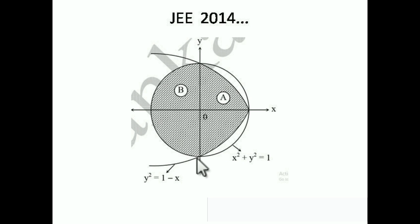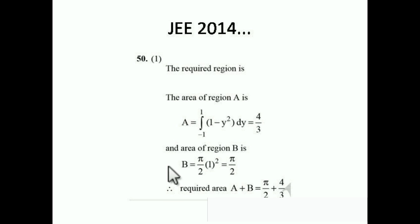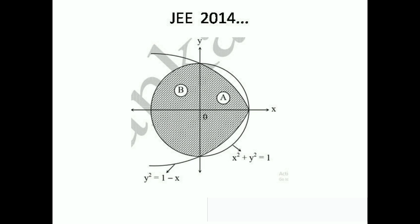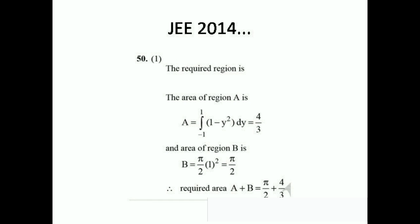For the circle (part B), limits are also from -1 to 1, and we use x dy. But since we know the formula, the area of a half circle is πr²/2. With r = 1, this is π/2. Adding part A and part B together: π/2 + 4/3 is the right answer — option number 1.